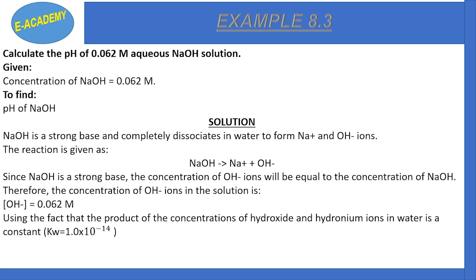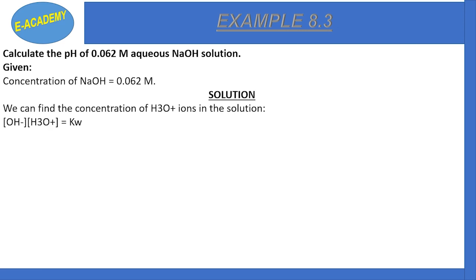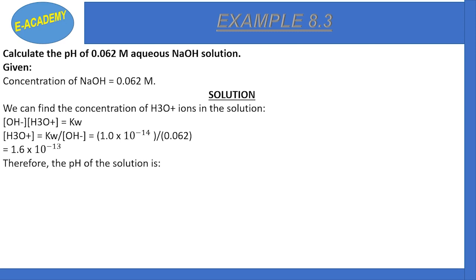We know that OH⁻ ion and H₃O⁺ ion concentrations are related by the water constant Kw = 1.0 × 10⁻¹⁴. So H₃O⁺ = Kw / [OH⁻] = 1.0 × 10⁻¹⁴ / 0.062 = 1.6 × 10⁻¹³. Then pH = −log(1.6 × 10⁻¹³) = 12.8. The pH of the NaOH solution is 12.8.